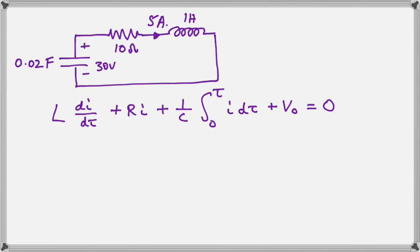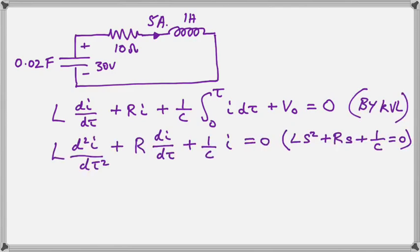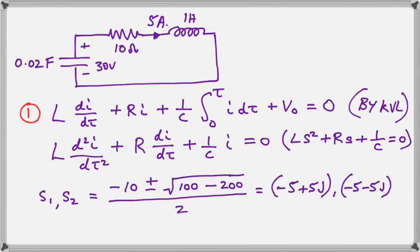So we write a KVL equation around the loop as shown there and we differentiate it. Then we use our characteristic equation there on the right to solve in the quadratic formula and out pops our two natural frequencies. Those two complex numbers there are called the pair of natural frequencies of this circuit. We've labeled the initial KVL equation 1 because we're going to return to that.